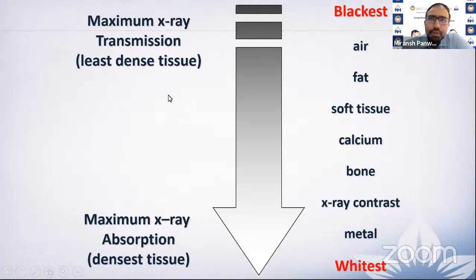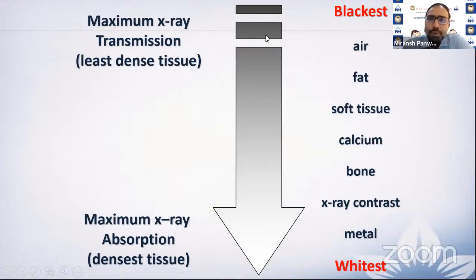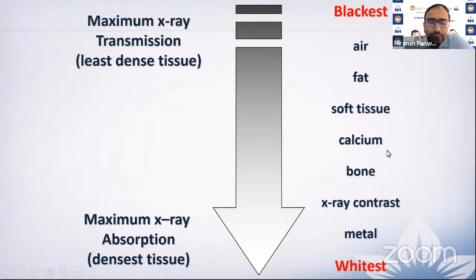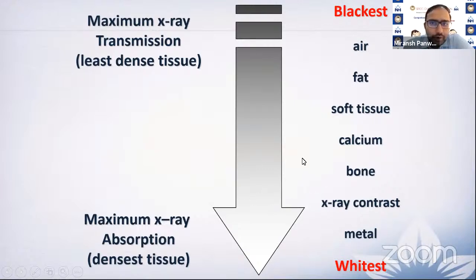When tissue density is low — such as air and fat — maximum X-ray transmission occurs and the structure appears black. As density increases, for example bone or metal, X-rays cannot penetrate and these appear white or opaque. So air and fat have low density and a blackish appearance on X-ray, while bone, contrast, and metal appear white. This is the basic understanding needed when reading X-ray or CT.